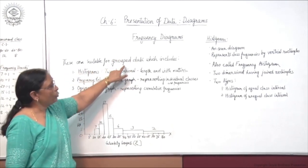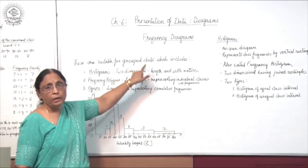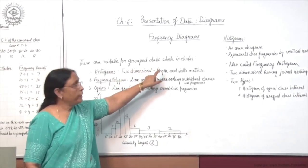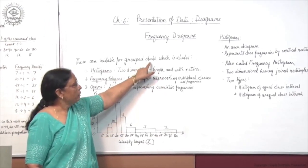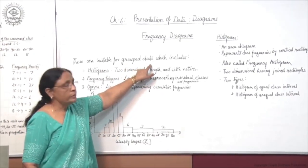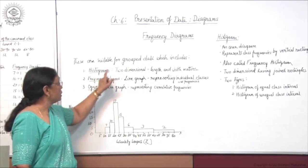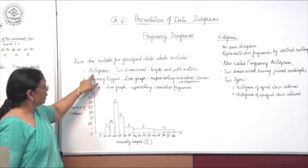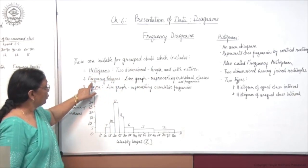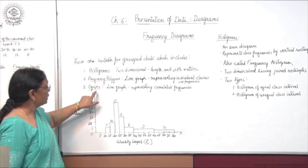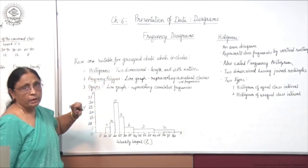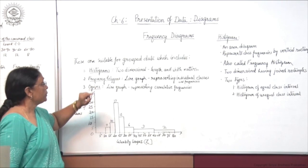These are more suitable for grouped data. The type of diagrams used with grouped data includes histograms, frequency polygons, and ogives — these are 3 types.